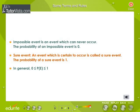Sure event: An event which is certain to occur is called a sure event. For example, the event of getting a number less than 7 on throwing a die once is a sure event. The probability of a sure event is 1.